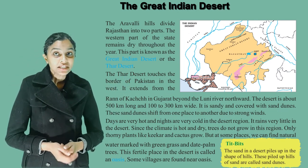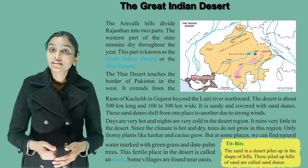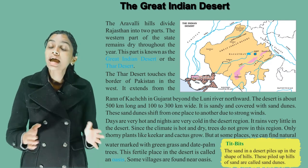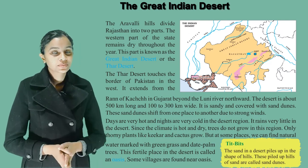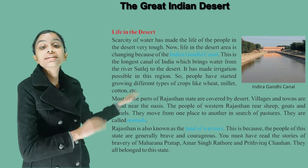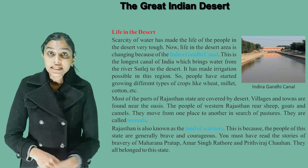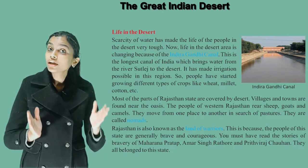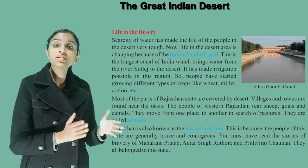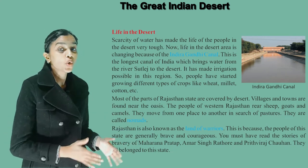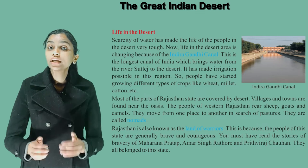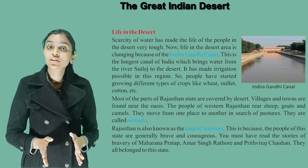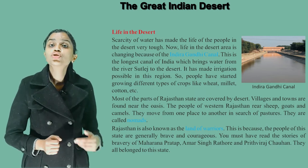The sand in a desert piles up in the shape of hills — these piles of sand are called sand dunes. Scarcity of water has made the life of the people in the desert very tough. However, life in the desert area is now changing.